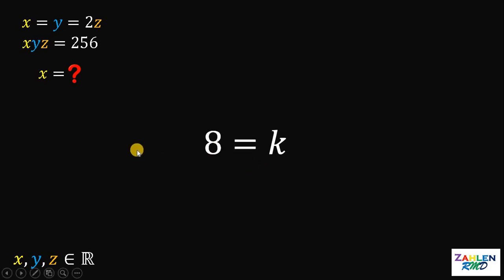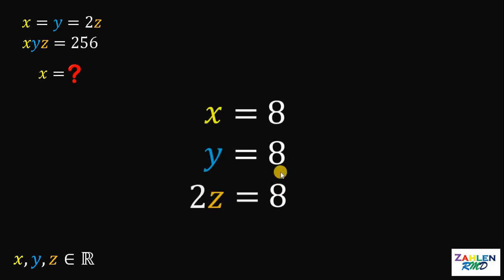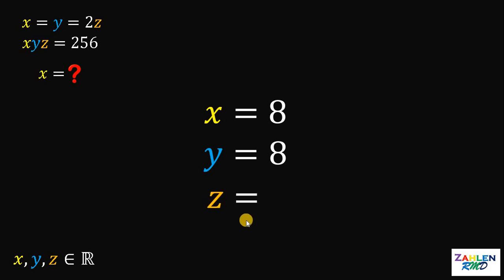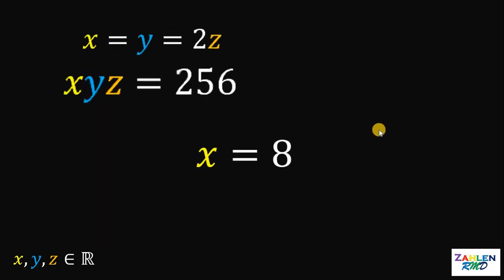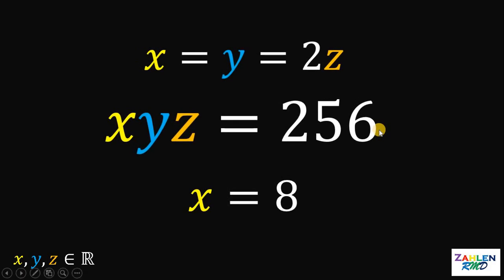Going back to our previous equation, we can replace all k with 8. Therefore, x equals 8, y equals 8, and 2z equals 8. Dividing both sides by 2, we get z equals 4. So we have x equals 8, y equals 8, and z equals 4. But in this question, we need to find the value of x only. Therefore, our answer is just 8. And as always, we are done.